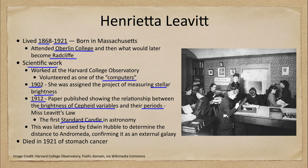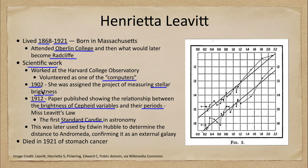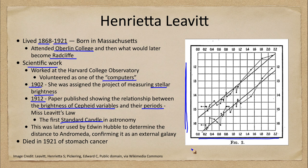What she found was a relationship between the period — how long it took the Cepheid to vary — and its brightness, or magnitude. This straight-line relationship showed a direct link: a very bright Cepheid would have a longer period, and a very faint Cepheid would have a shorter period.